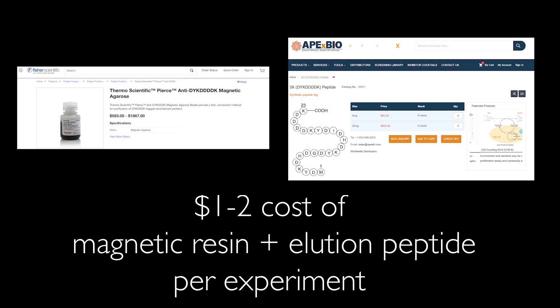I've used a recombinant flag tag and found it to be highly effective for purifications. I calculated a cost of about one to two dollars for 10 microliters of sample depending on whether you buy your reagents in bulk. This could be enough for a cryo-EM dataset if you had a really good sample.